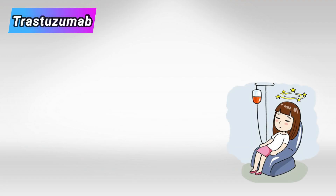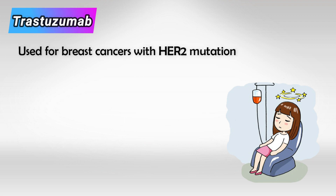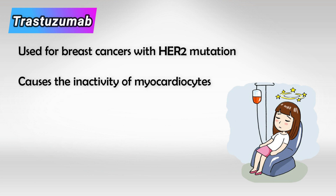The first in our list is Trastuzumab. It is used to treat breast cancer that is caused by HER2 mutation. The medication causes non-functioning cardiocytes, although it is irreversible.